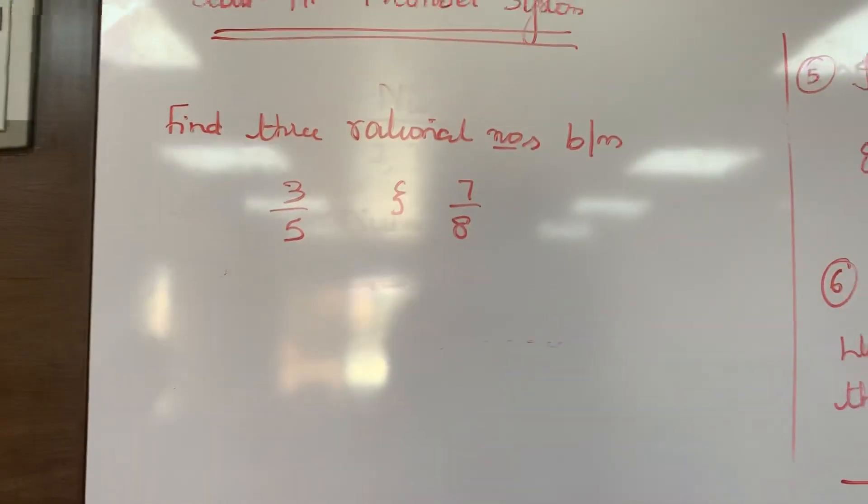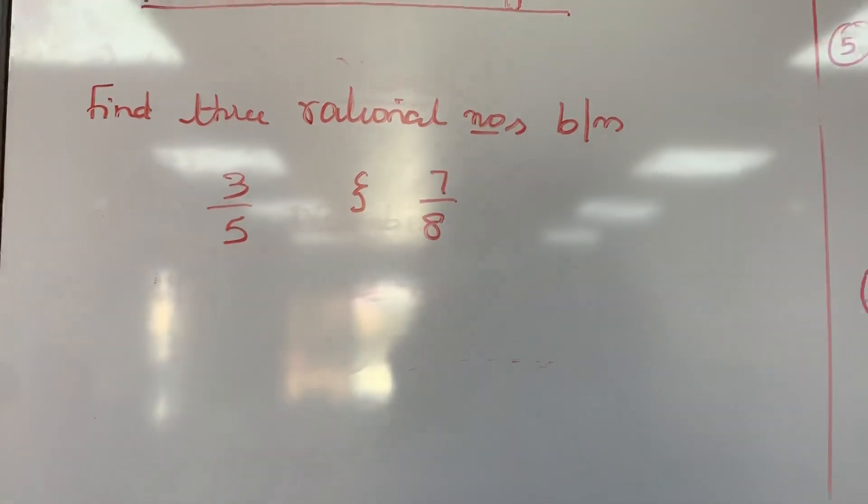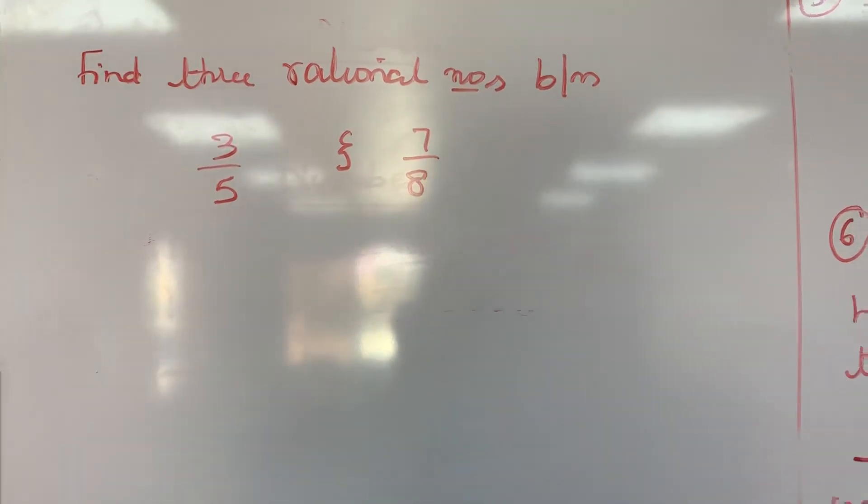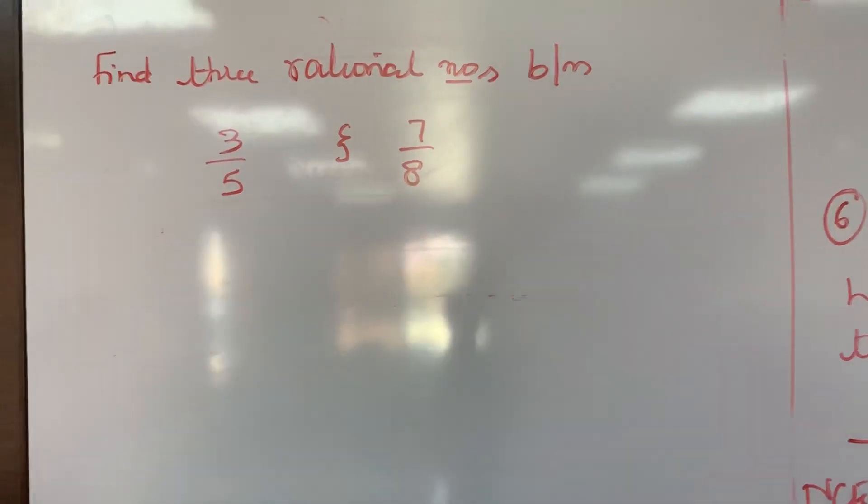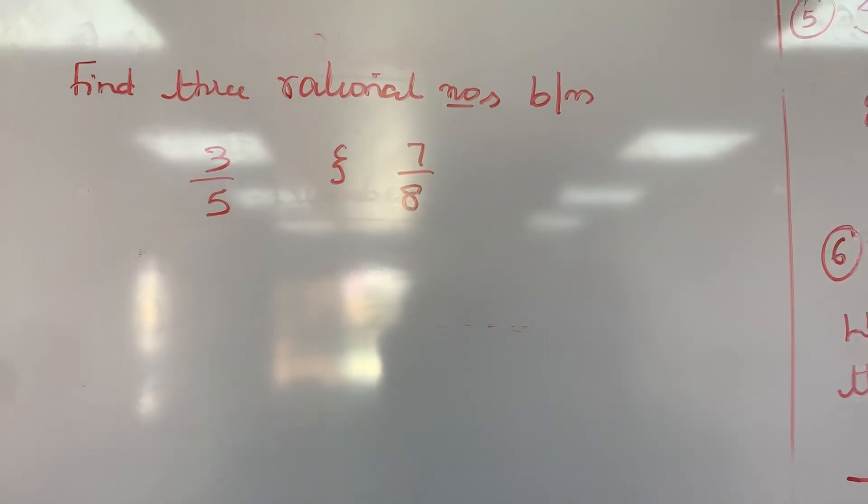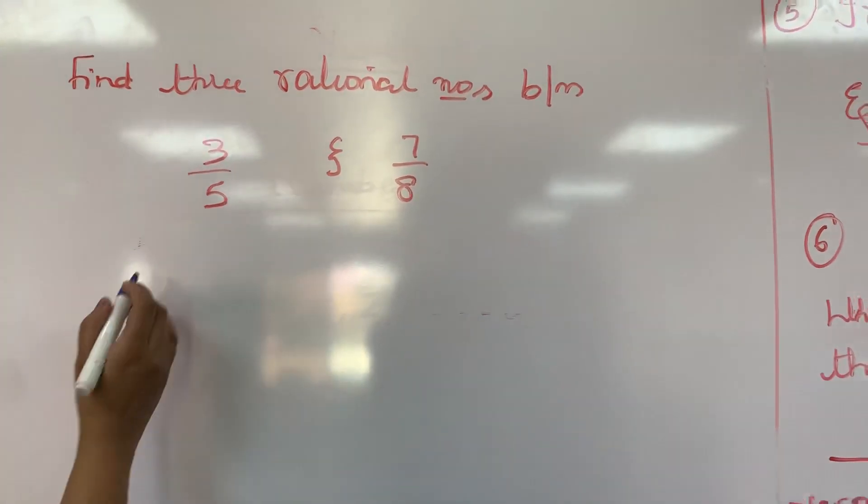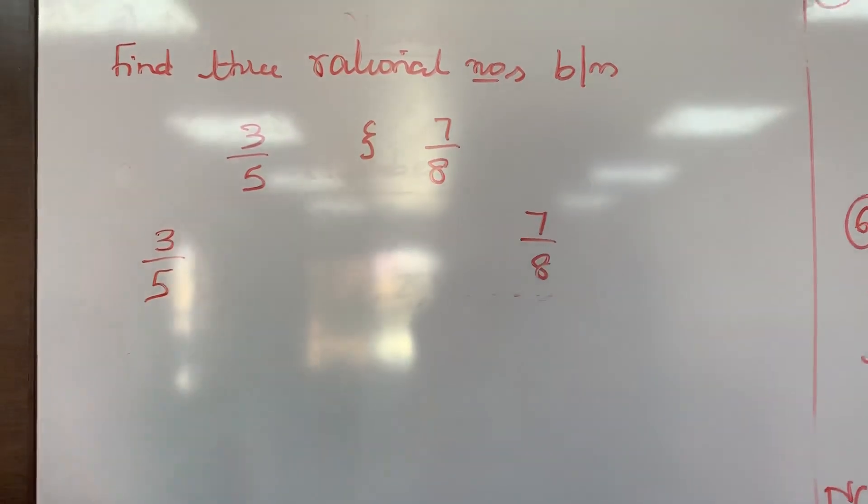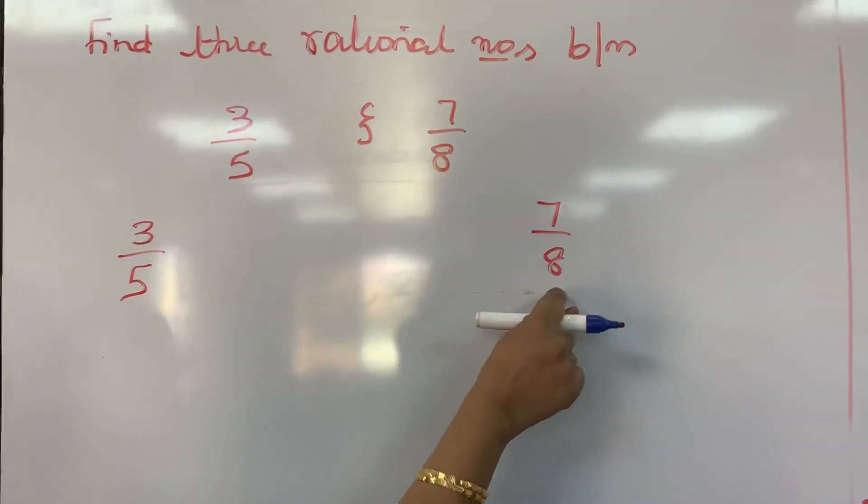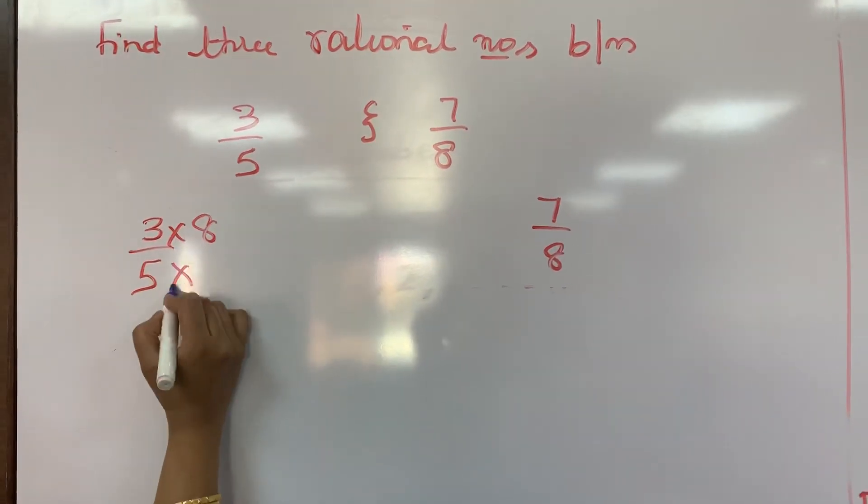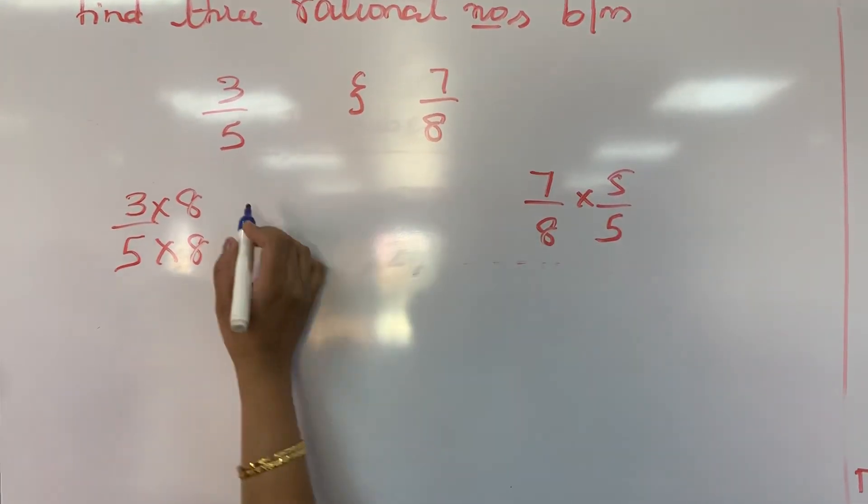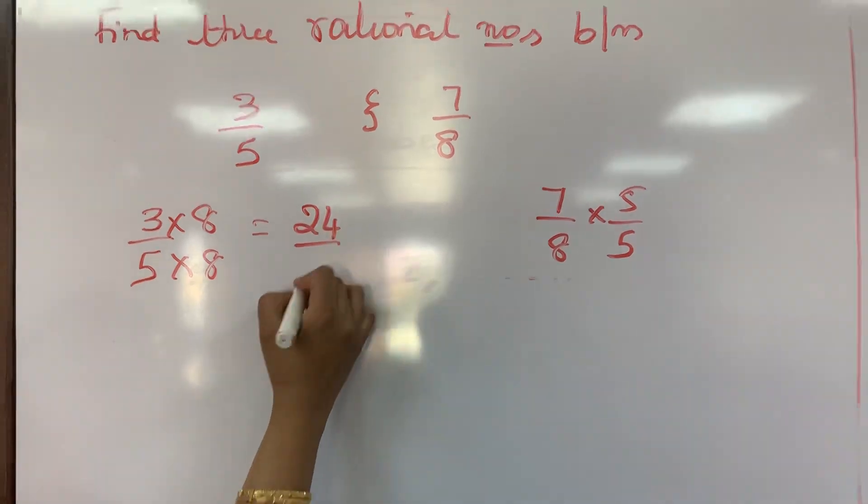Now next question is find 3 rational numbers between 3 by 5 and 7 by 8. Now first before starting this, first see whether denominator is same or not. If not, make it same by taking LCM. See here the first number given is 3 by 5, other number is 7 by 8. Simple. Whatever is denominator here, multiply and divide here. Same way whatever is denominator here, multiply and divide here. So you get here 24 by 40.